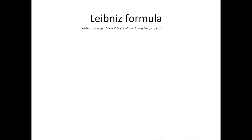Let's begin the inductive step. Let n be a natural number, fixed, verifying the property. The (n+1)th derivative of fj is equal to the derivative of the nth derivative of fj, which equals the derivative of the sum from k equals 0 to n of n choose k, times the kth derivative of f, times the (n minus k)th derivative of j.